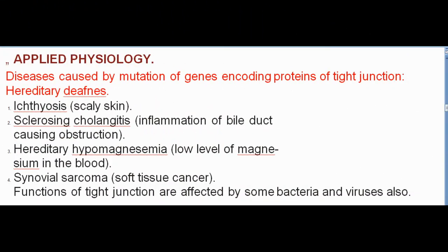Applied physiology — diseases caused by mutation of genes encoding proteins of tight junction include: hereditary deafness; ichthyosis (scaly skin); sclerosing cholangitis (inflammation of bile duct causing obstruction); hereditary hypomagnesemia (low level of magnesium in the blood); and synovial sarcoma (soft tissue cancer). Functions of tight junctions are also affected by some bacteria and viruses.